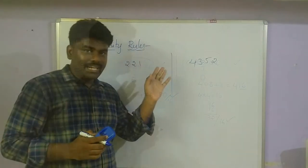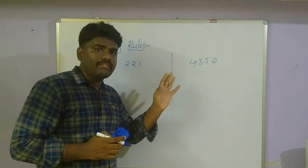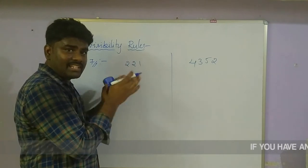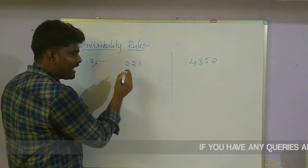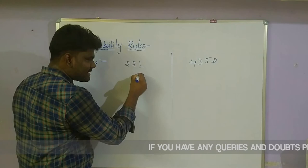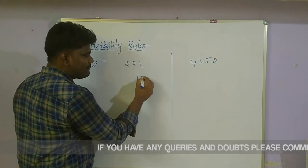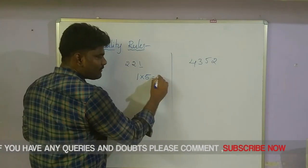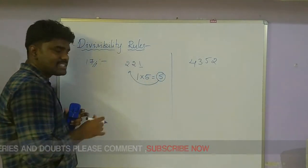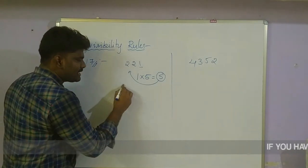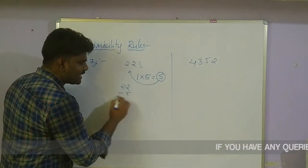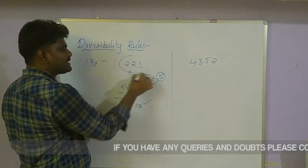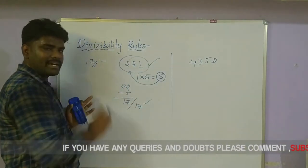Now we are entering into the 17 divisibility rule. It looks similar to the 7 and 13 rules. Take the units place digit — here it is 1. Multiply by 5: 1 × 5 = 5. Subtract 5 from the remaining digits: 22 minus 5 = 17. Is 17 divisible by 17? Yes. Then the entire number is divisible by 17.